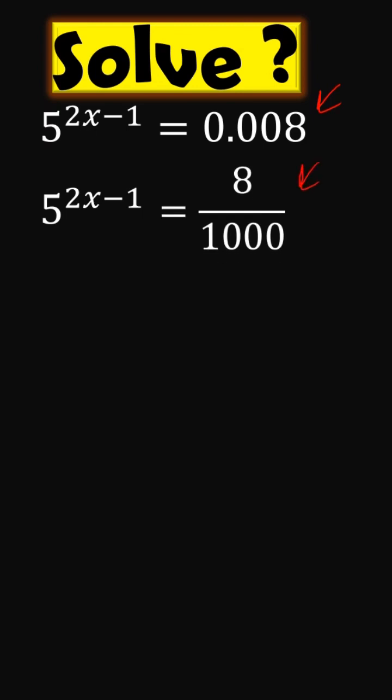this fraction. If you now divide both the numerator and the denominator by 8, you're going to get 1 over 125. Now this 125 is the same as 5 times 5 times 5, which is 5 cubed. If you now